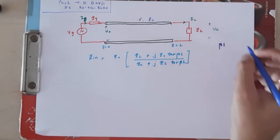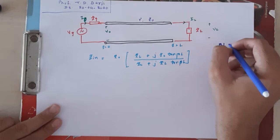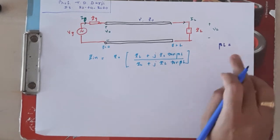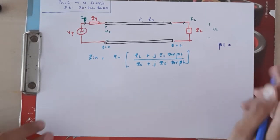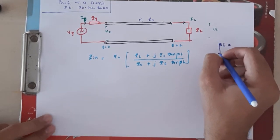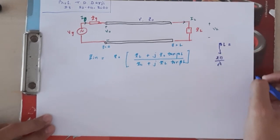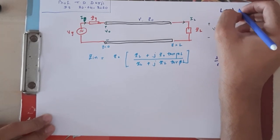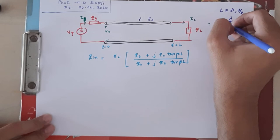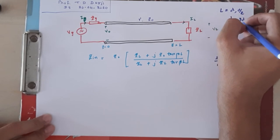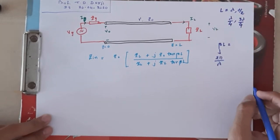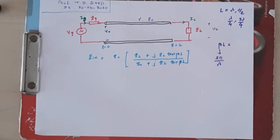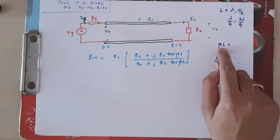Beta L is known as the electrical length of the transmission line, where capital L is the physical length and β = 2π/λ. The length may be λ, λ/2, λ/4, or 3λ/4. Based on the length you can find out the electrical length of the transmission line. So β·L is known as the electrical length of the transmission line.